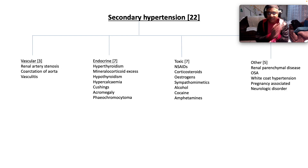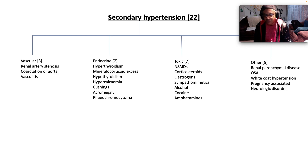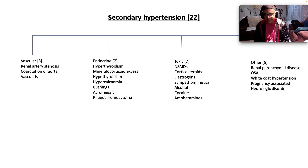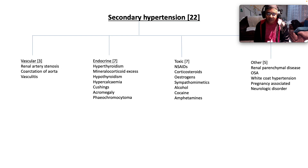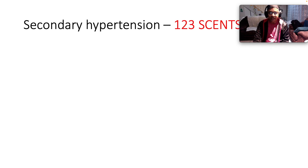Obstructive sleep apnea can also cause it, as can white coat hypertension, pregnancy-associated causes where we talk about preeclampsia and pregnancy-induced hypertension, and neurological disorders. Remember, if you have raised intracranial pressure, not only will you have cranial nerve three and six palsies, but the late response will be hypertension with bradycardia and altered mentation — which is Cushing's triad.